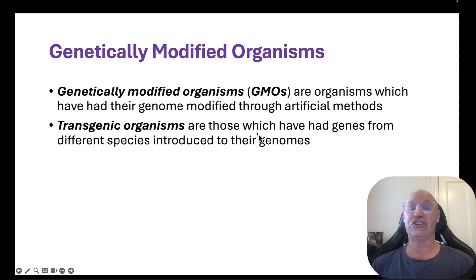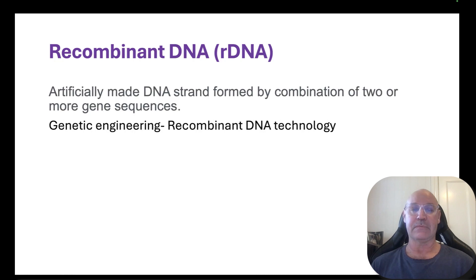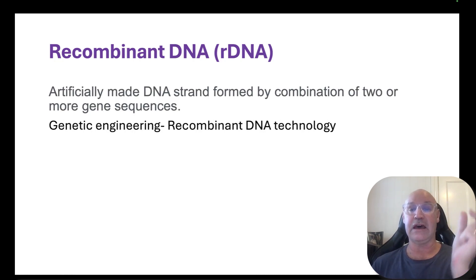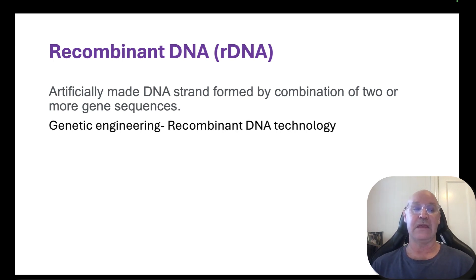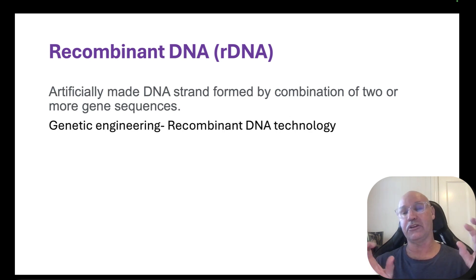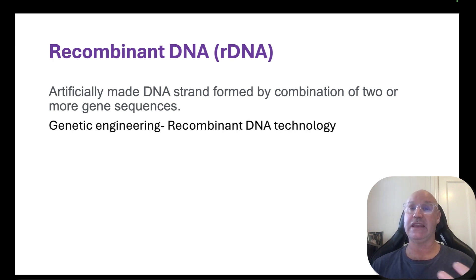Transgenic organisms are those which have had genes from different species introduced into their genomes. Recombinant DNA technology is a way of taking genetic material and inserting it into the genome. It's an artificially made DNA strand formed by combining two or more gene sequences, and it's used in genetic engineering — specifically recombinant DNA technology.